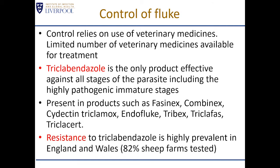Work we've published recently suggests that resistance to triclobendazole is highly prevalent in England and Wales. We tested about 72 sheep farms across England and Wales, and 82% of those farms had resistant fluke on them when tested.